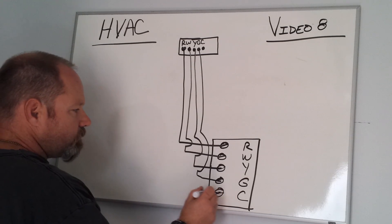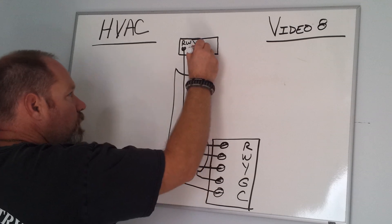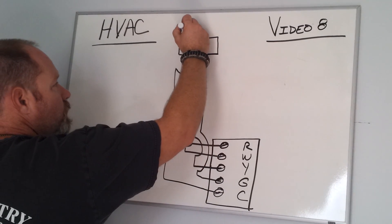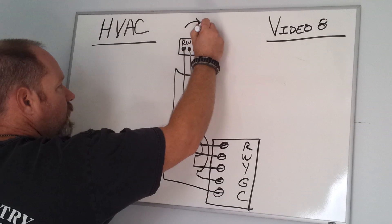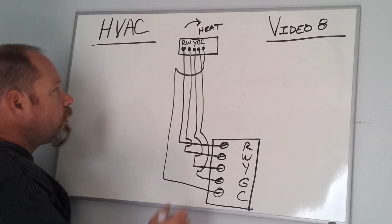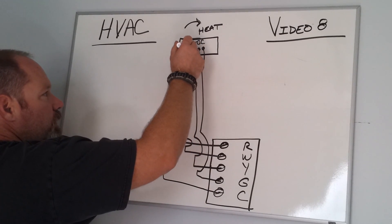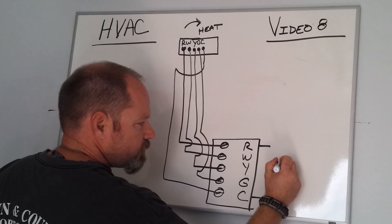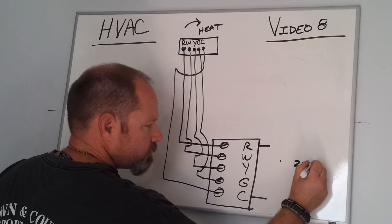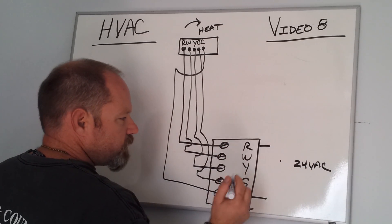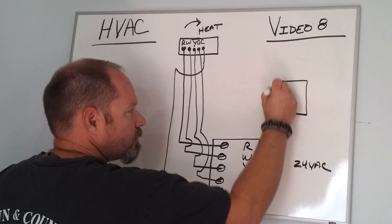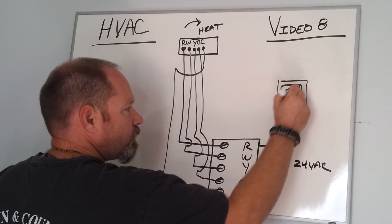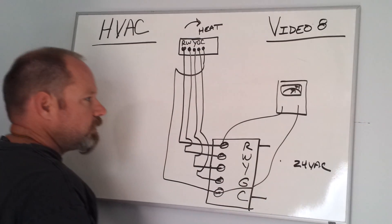The way this works is when your thermostat—let me start over. Down here, the terminals R and C are going to be 24 volts AC. If you take your electrical meter and you put it here and you put it here, you're going to see 24 volts.